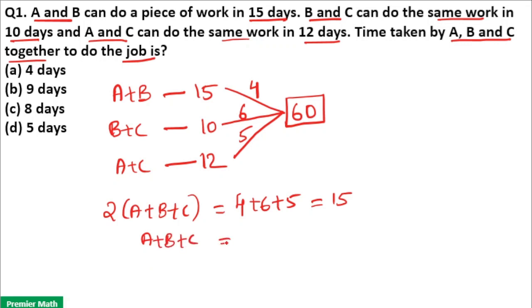That means efficiency of A plus B plus C is 15 by 2 which is equal to 7.5 unit. So, here total work is 60 unit and efficiency of A, B and C is 7.5 unit. That means time taken by A, B, C together to complete the 60 unit work is 60 by 7.5 which is equal to 8 days.